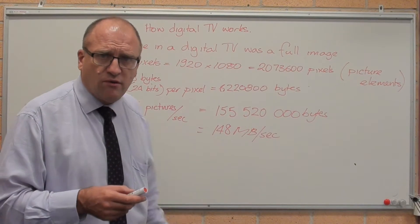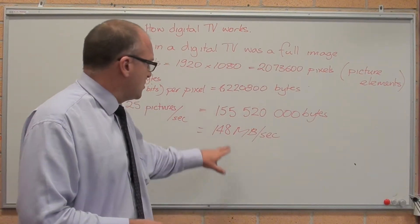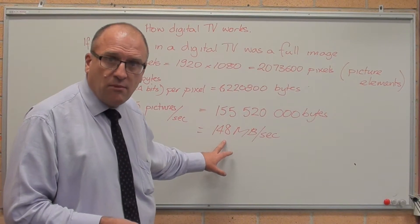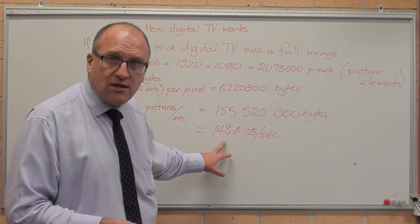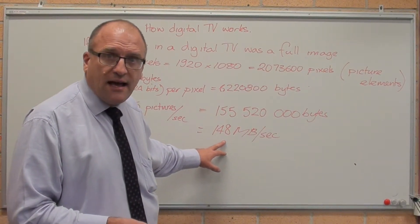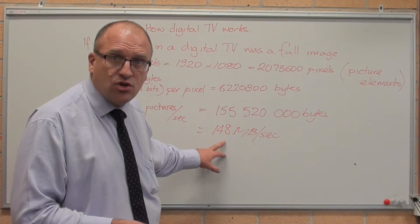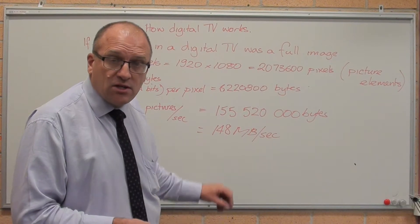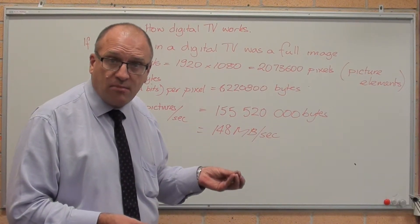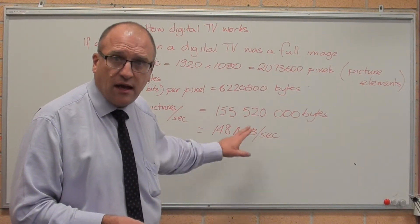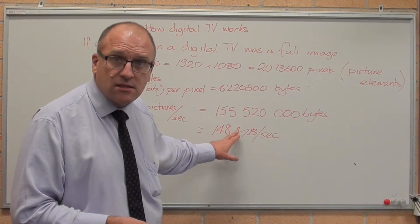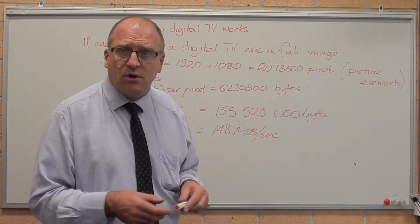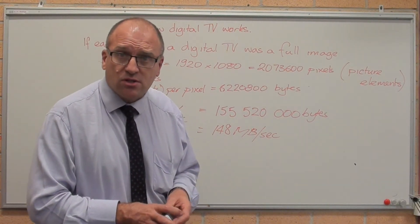Your internet at home does not carry 148 megabytes per second. Multiply that by 8 and you get 1,200 megabits — 1.2 gigabits per second. Even the most modern fibre to the house does not deliver 1.2 gigabits a second. And yet you can transmit it through the airwaves and pick it up on a cheap $30 set-top box.